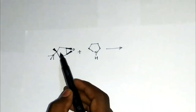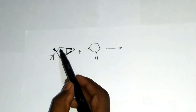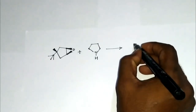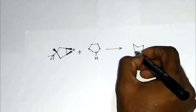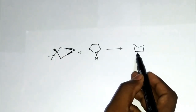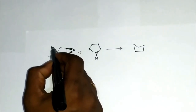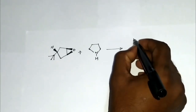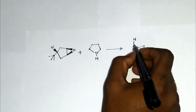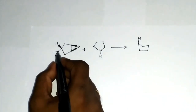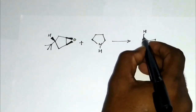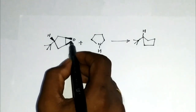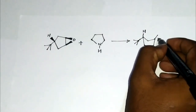Let us consider the reactants again. This is the cyclopentane ring drawn in its chair form. The hydrogen is above the plane of the paper, so it is drawn in the axial position. The group is in the equatorial form. The epoxide ring is above the plane of the paper and can be drawn accordingly.